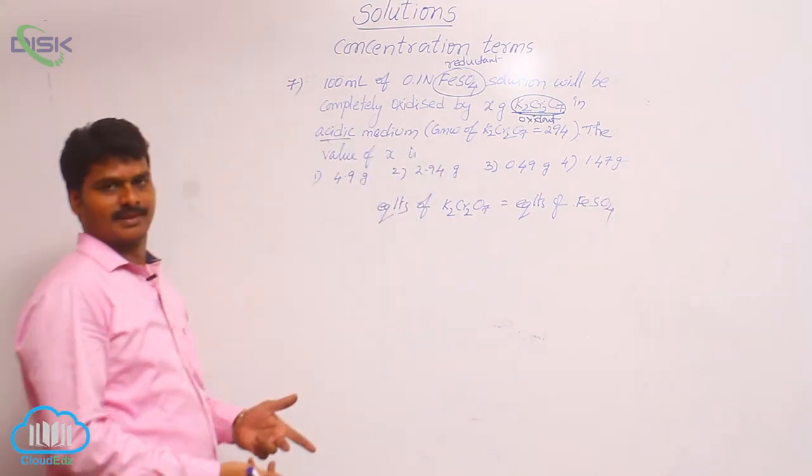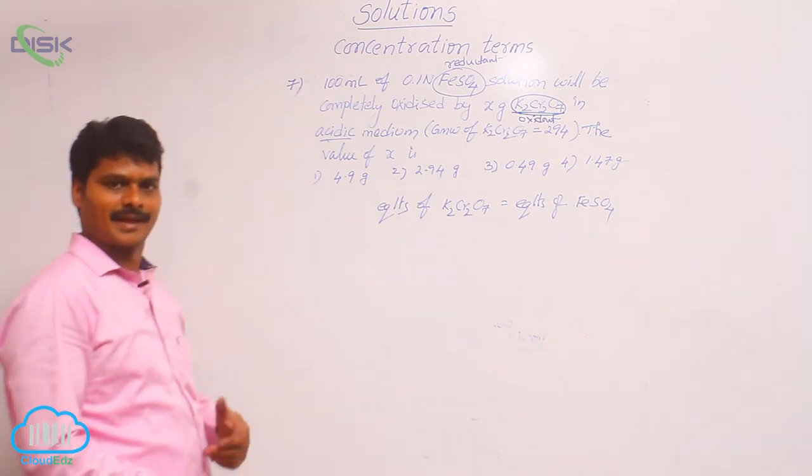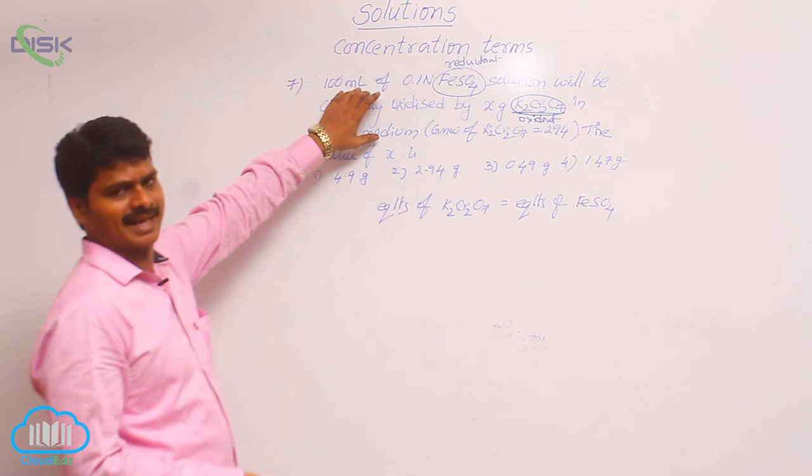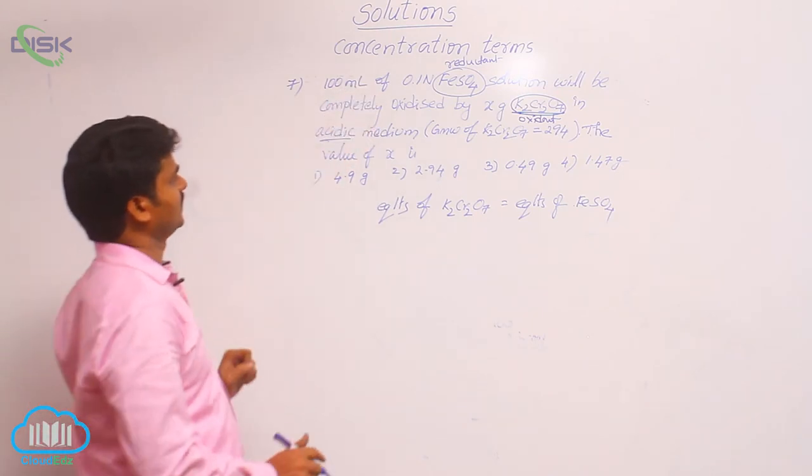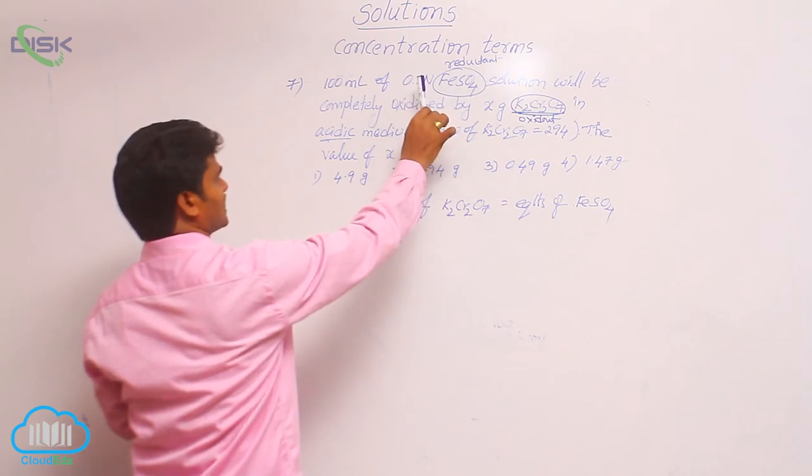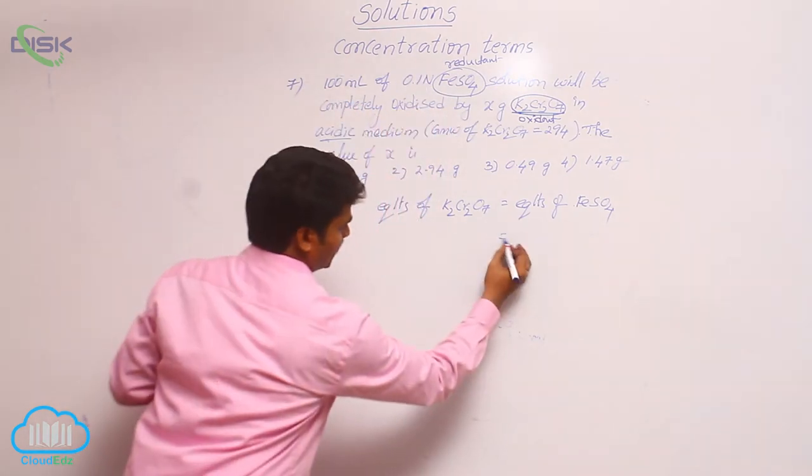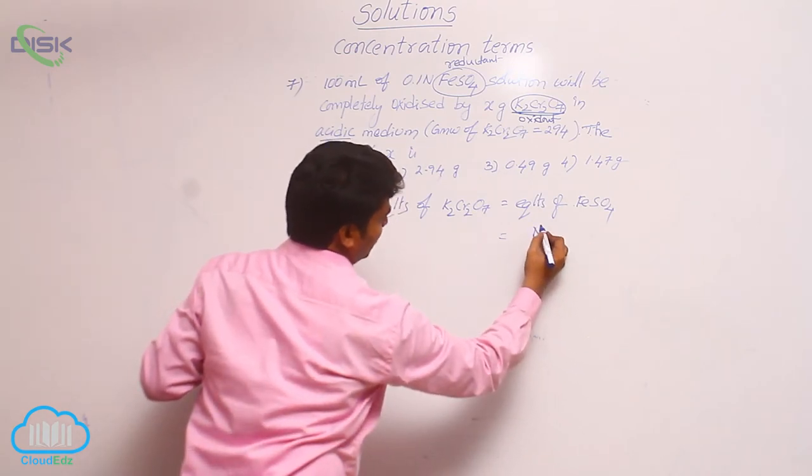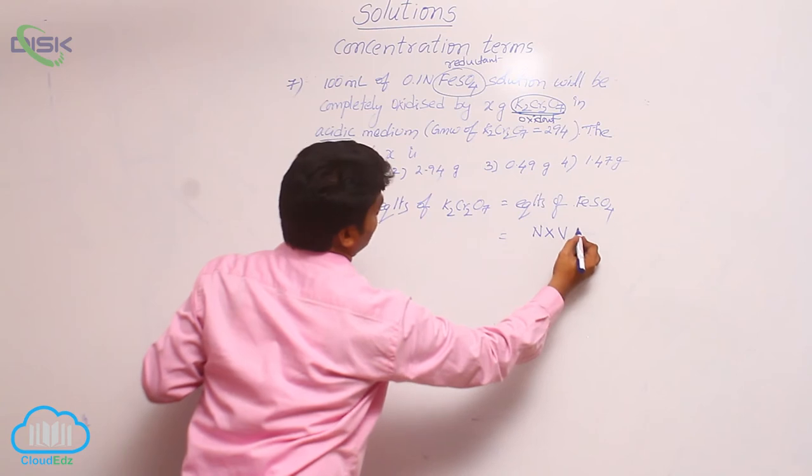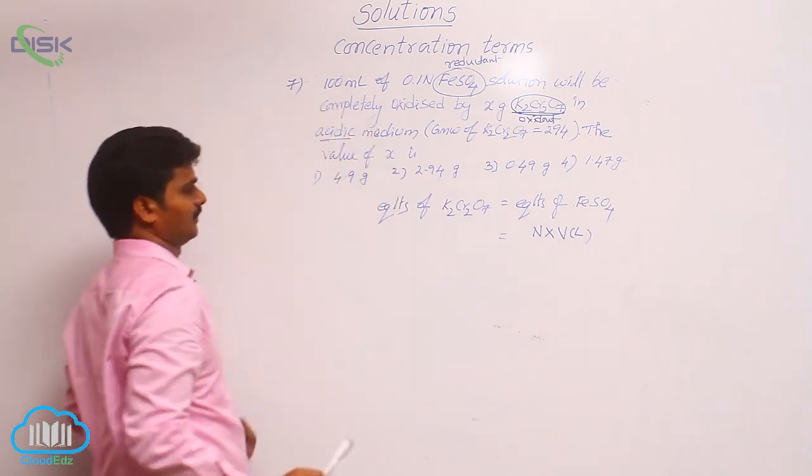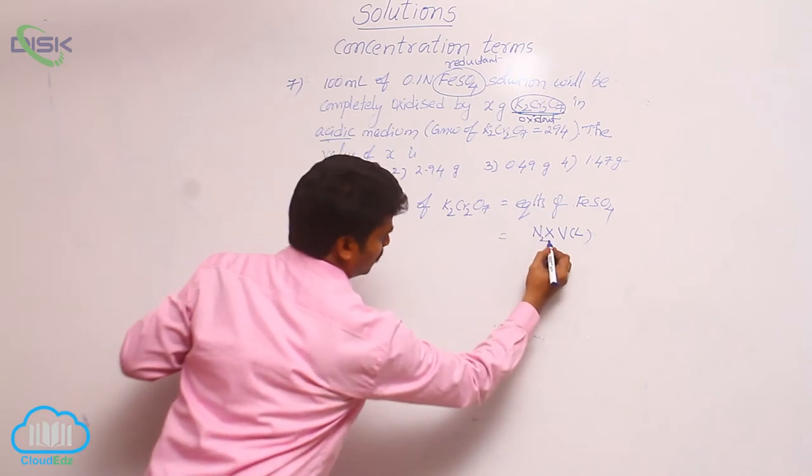How to write equivalents? To calculate equivalents, there are different formulas. Based on the information available, we select the formula. Information of FeSO4 is given as normality and volume. That is why equivalents of FeSO4 is normality times volume in liters. Here it's given in ml, so let it be N2 times V2.